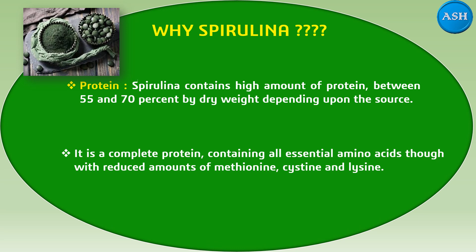Spirulina is also a complete protein. As it is a protein, proteins are made up of many amino acids — 20 forms of amino acids. So it contains all essential amino acids. Along with that, there are reduced amounts of methionine, cysteine, and lysine.